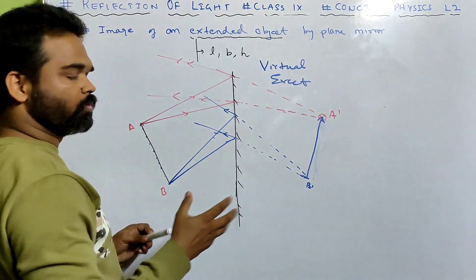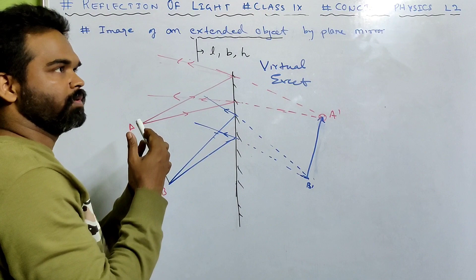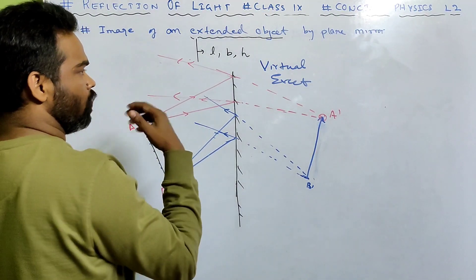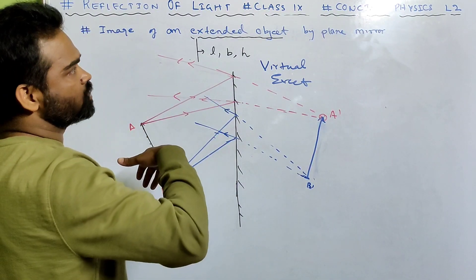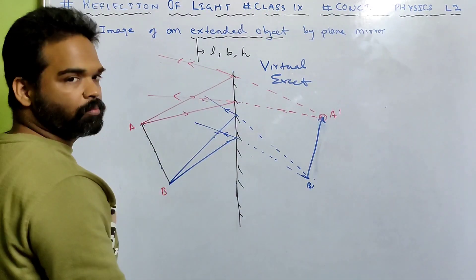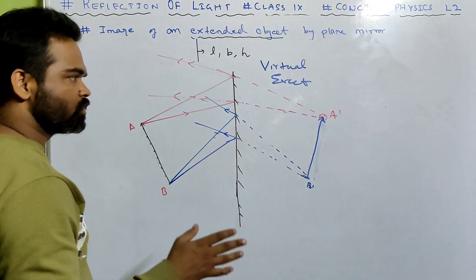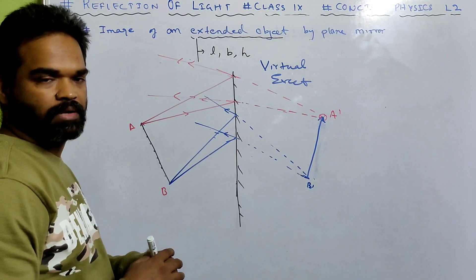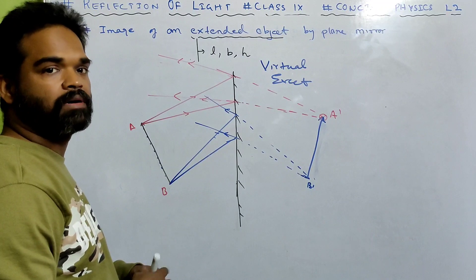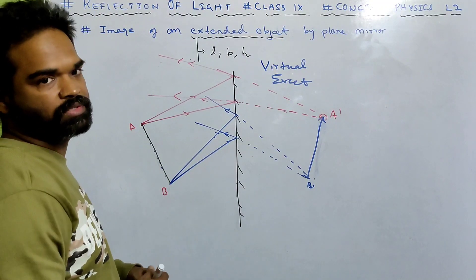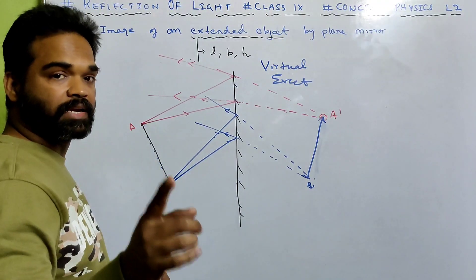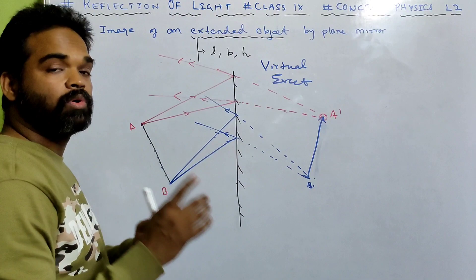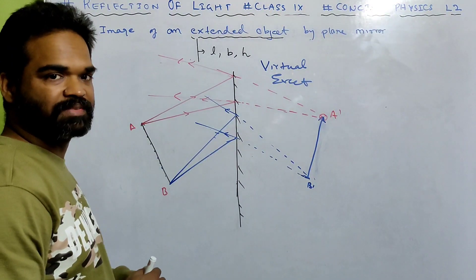So these were a few ray diagrams. We did how the image of a point object is formed and how the image of an extended object is formed. In this video, we will keep it till here. In the next video we will see the other portion. Till then, take care and be safe. If you like the video, do subscribe and share with your friends.